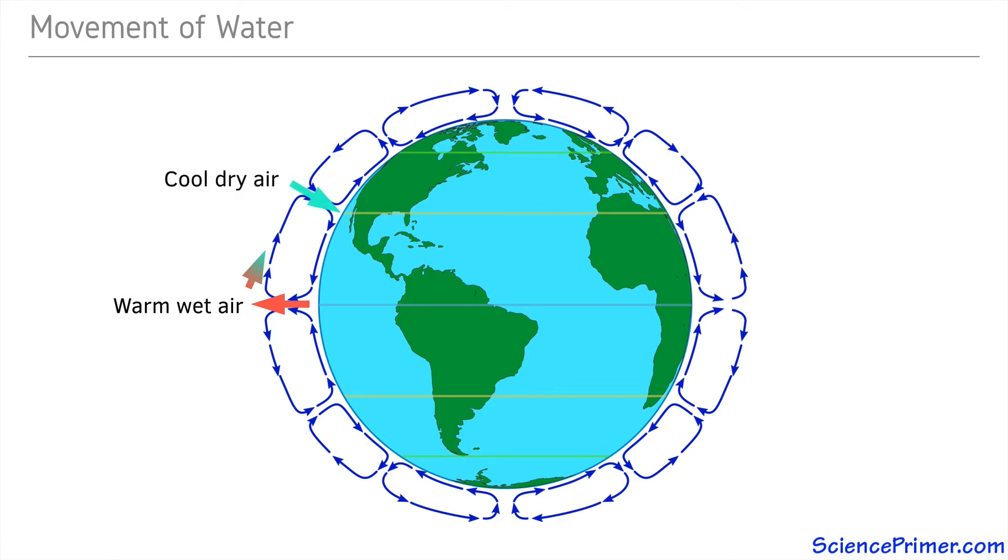At the edge of the convection cells, the now-cooled dry air falls, creating regions of high pressure. Once it reaches the ground, the cool dry air moves back along the ground, warming and picking up water vapor as it goes.